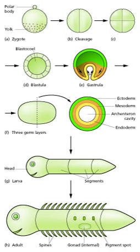Developmental biology is the study of the process by which animals and plants grow and develop. It also encompasses the biology of regeneration, asexual reproduction, metamorphosis, and the growth and differentiation of stem cells in the adult organism. In the late 20th century, the discipline largely transformed into evolutionary developmental biology.